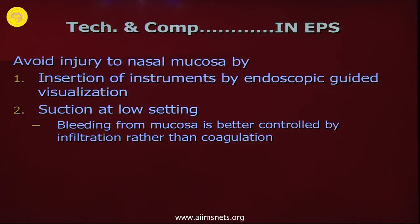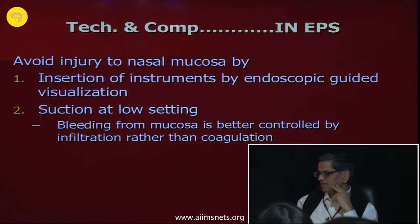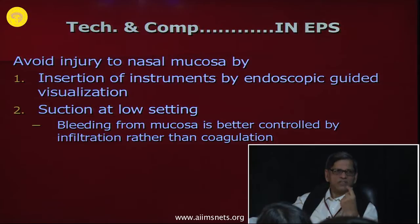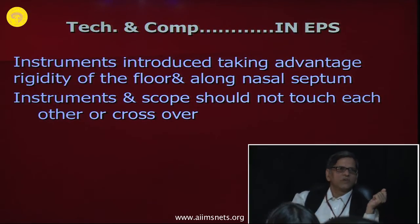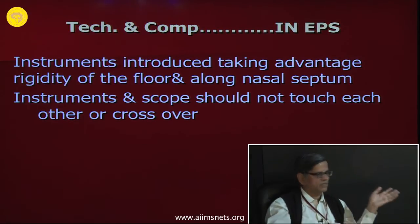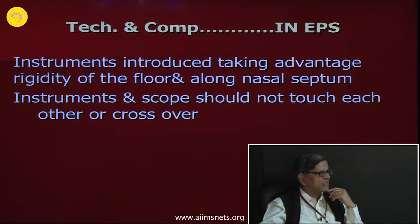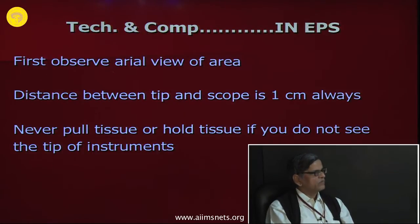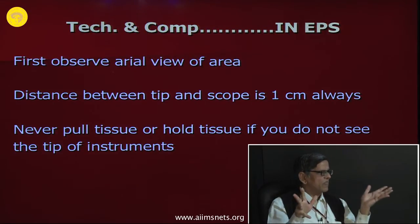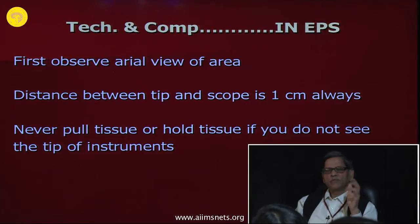Avoid injury to nasal mucosa by endoscope-guided visualization when inserting instruments. Keep suction at low setting; if there is mucosal bleeding, control it by infiltration rather than coagulation. Introduce instruments along the floor to avoid injuring the middle turbinate or other turbinates. Instruments and scope should not touch each other and should never cross over — try to keep the path as straight as possible. If you see a semi-lunar sign the scope is touching tissue — just rotate it. If the lens fogs, irrigate with warm saline. When entering the nasal cavity, first get an aerial view of the whole area.